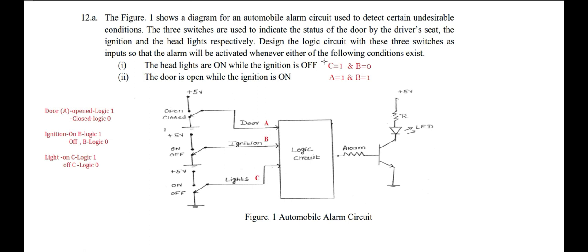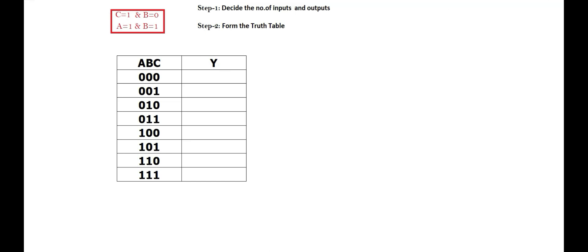To form the truth table, we take these two conditions. The first step was deciding three input variables A, B, C and one output variable Y. Now for step two, we write the output values based on these two conditions. The first condition is B equals zero and C equals one, and the second is A equals one and B equals one.